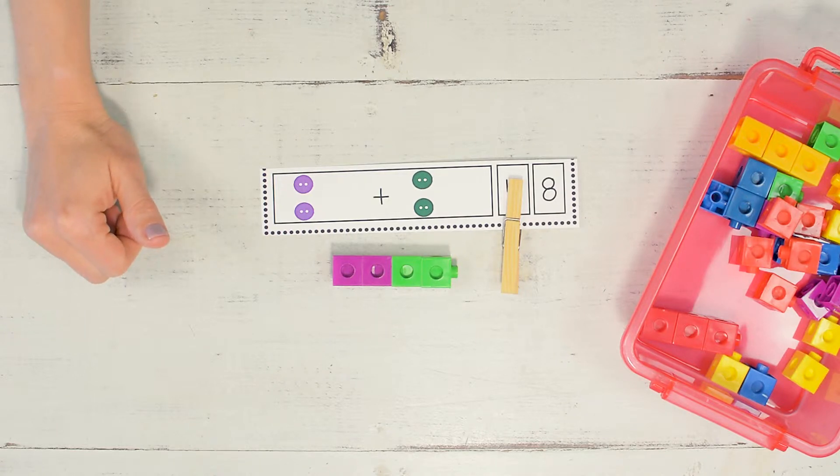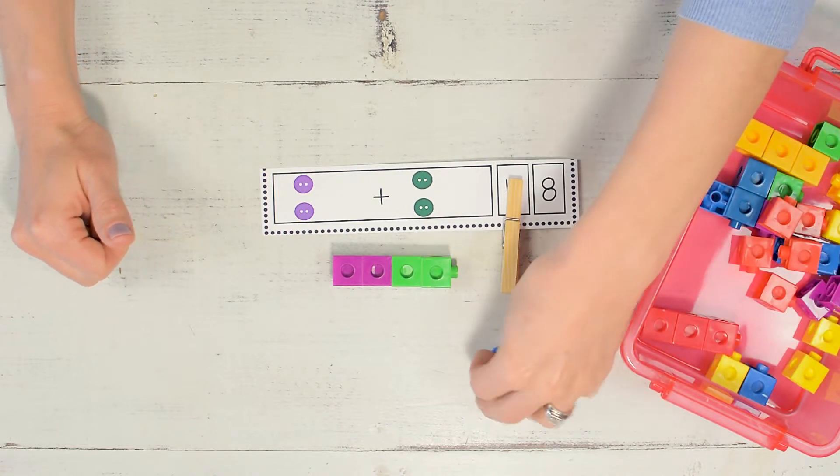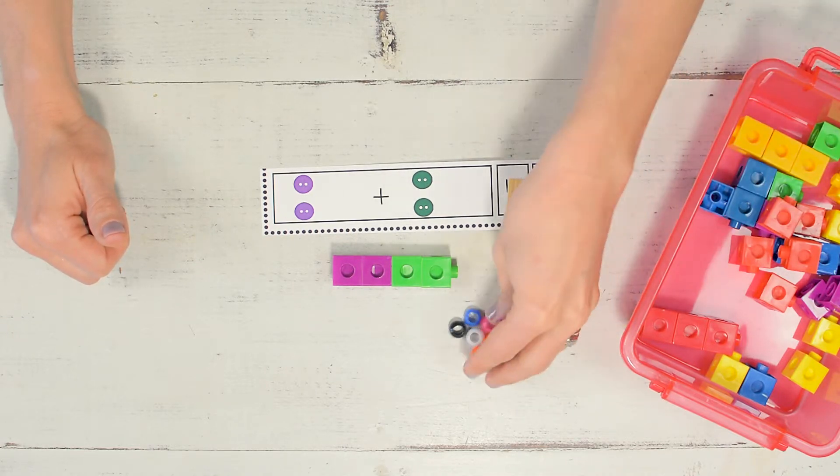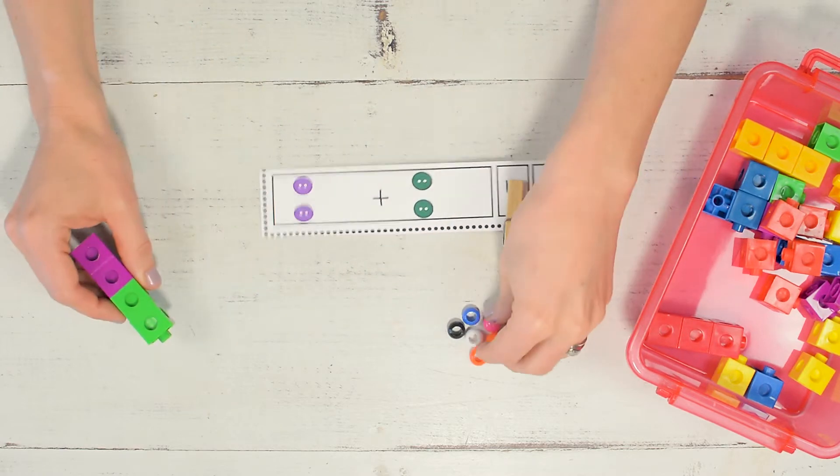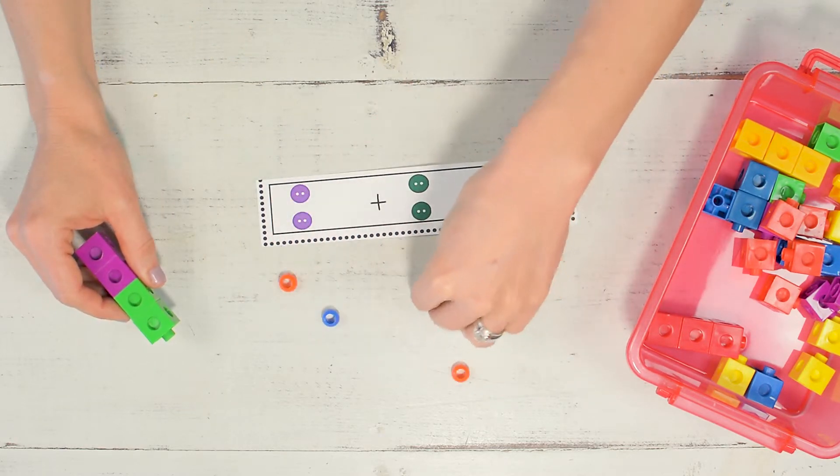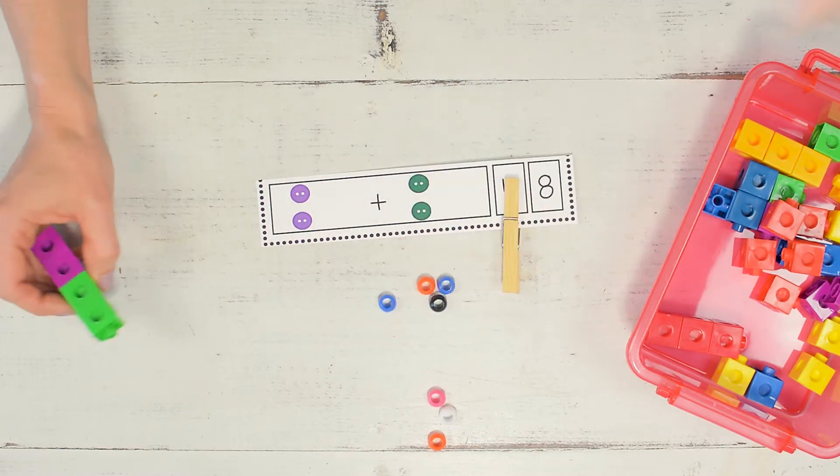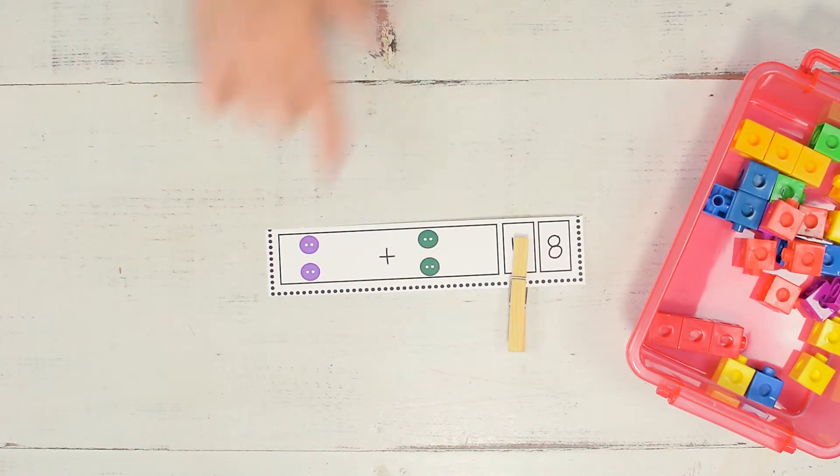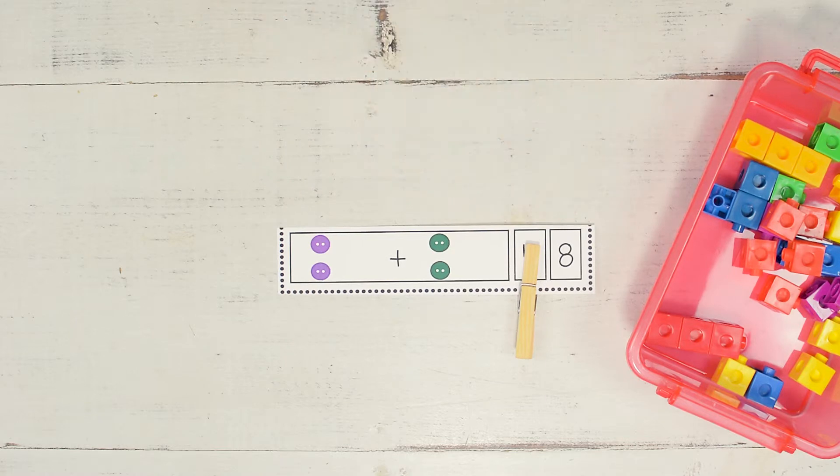Now if you don't have snap cubes, you can use anything. I have some bits, some little beads, sometimes I use gummy bears because those are really fun to use, or some cereal. Anything that you can take to put into groups to make the sum of the activity. Now it's your turn to finish counting the buttons and finding the sum.